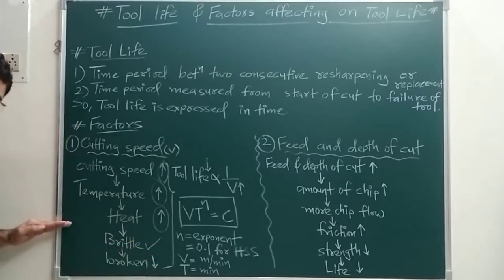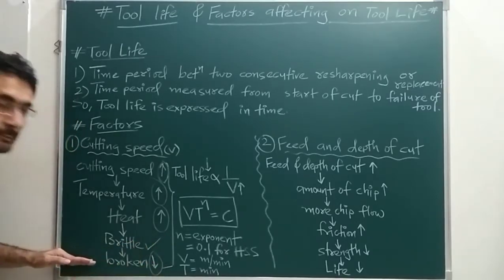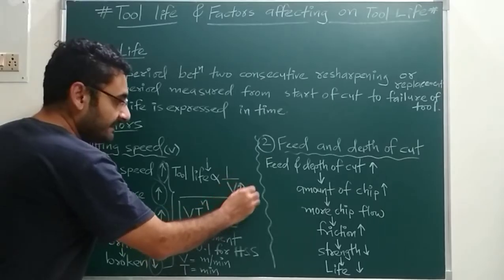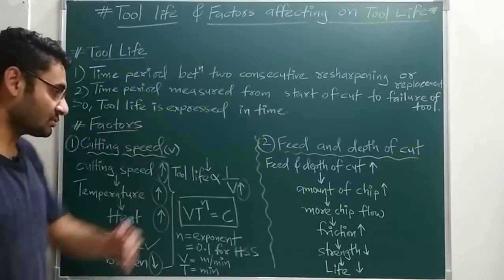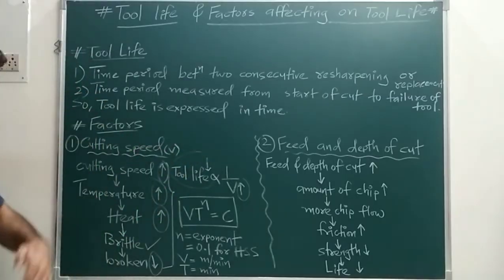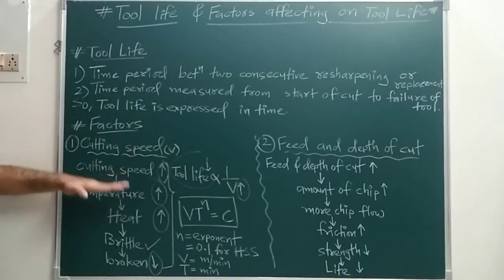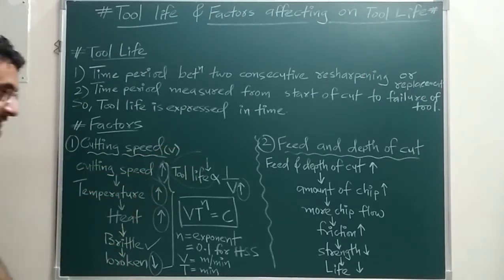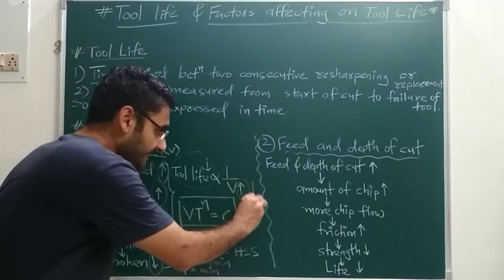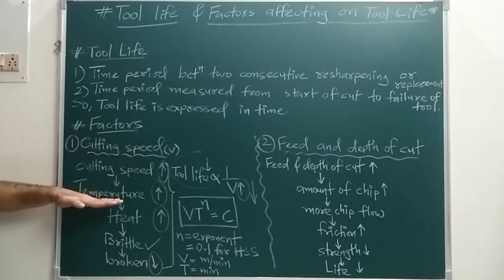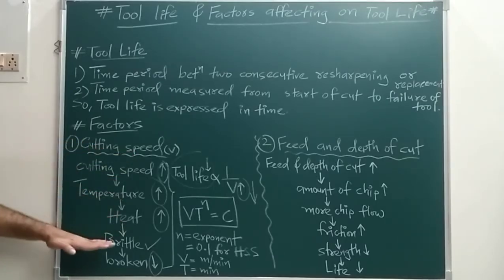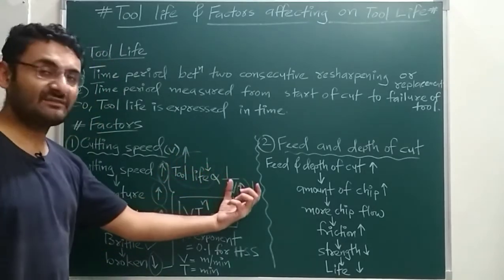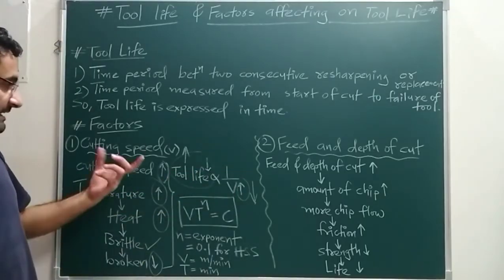When the tool becomes very hot it will become brittle, and if the tool becomes brittle it will break — so tool life is decreased. If cutting speed is increased, tool life is decreased, because at high cutting speed temperature and heat are more, making the tool brittle. Conversely, if cutting speed is decreased, less temperature and less heat are produced, the tool does not become brittle, and tool life increases. So tool life and cutting speed are inversely proportional to each other.